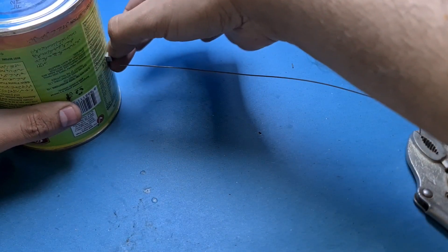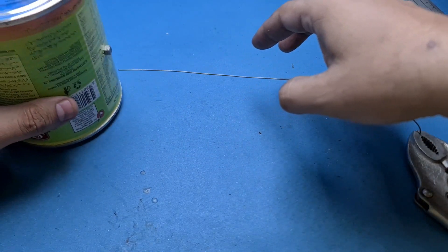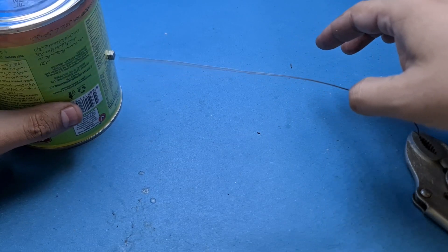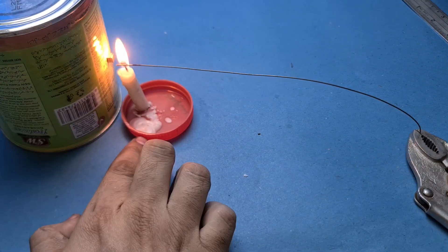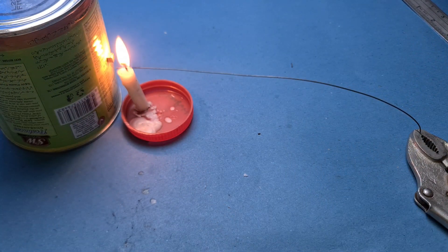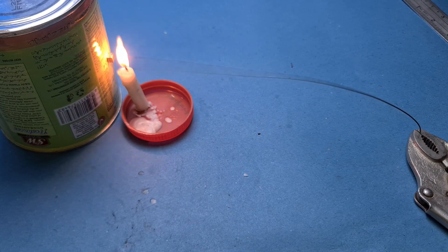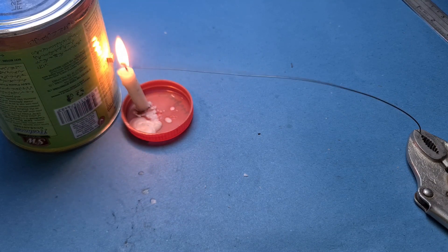As you can see, the magnet is forcing the wire to change its default position. But if I heat the wire to its Curie temperature using a candle flame, it loses its magnetic properties and goes back.